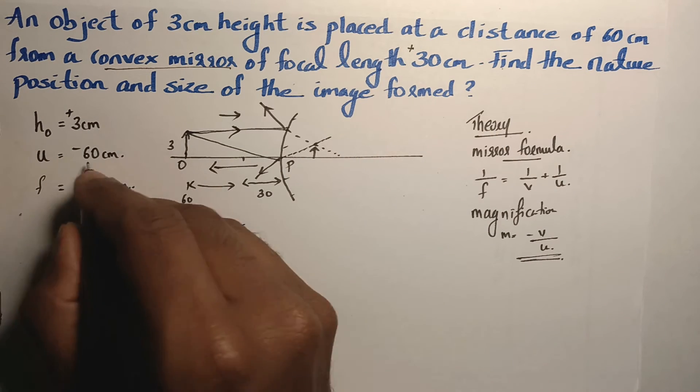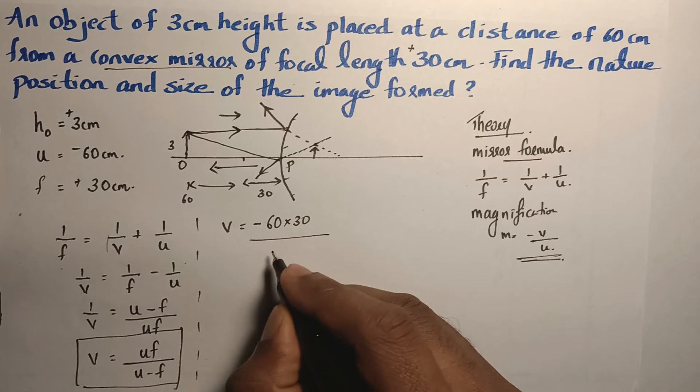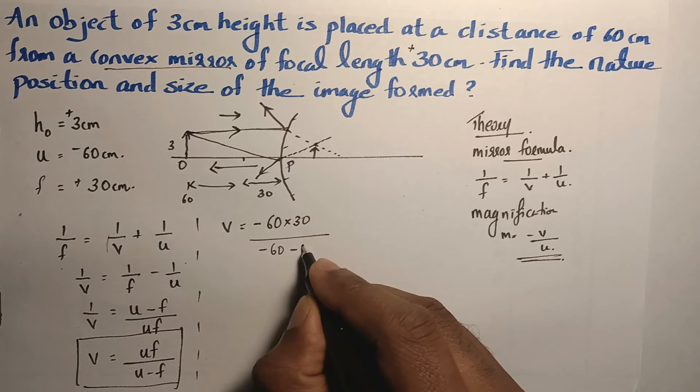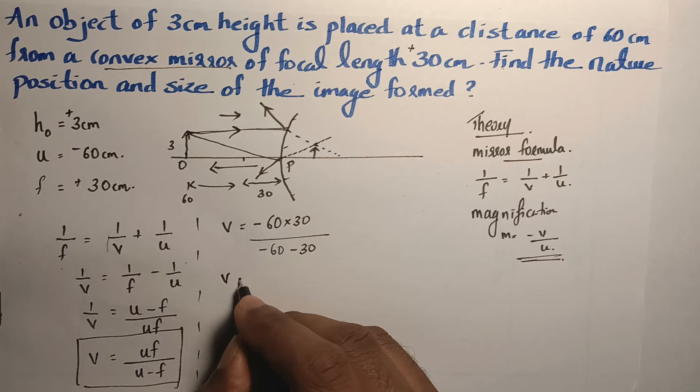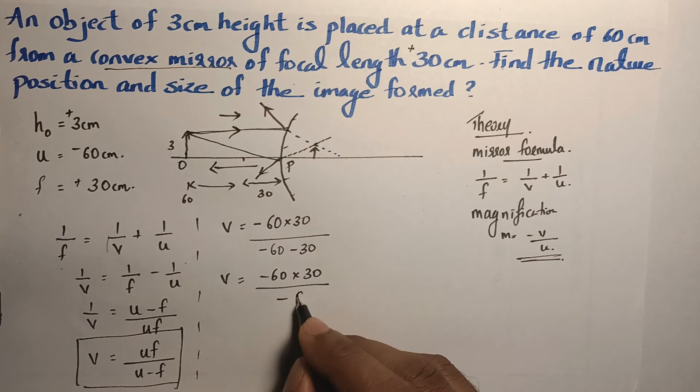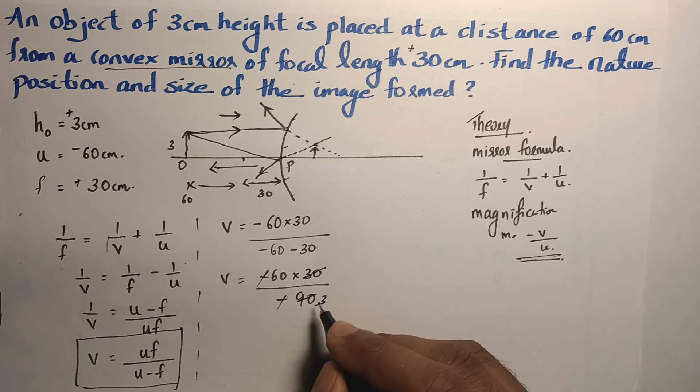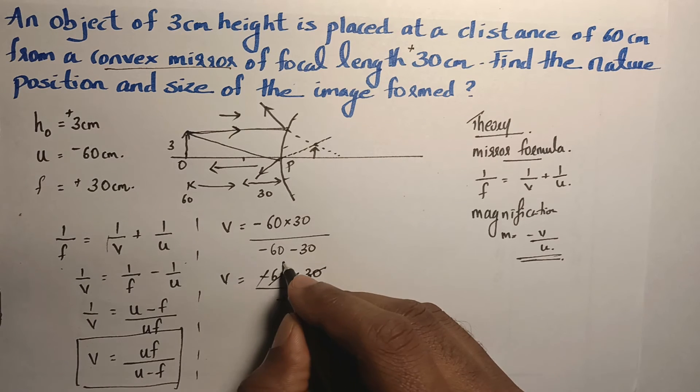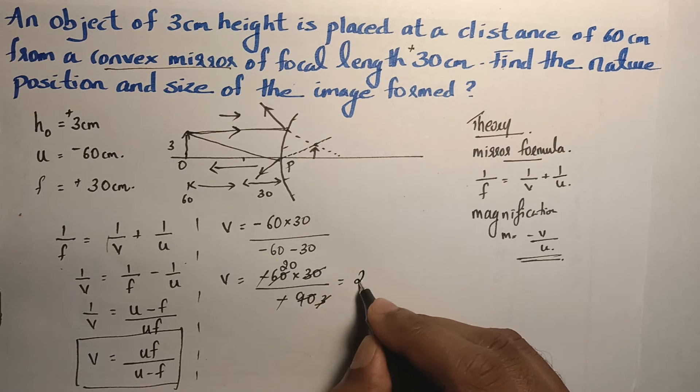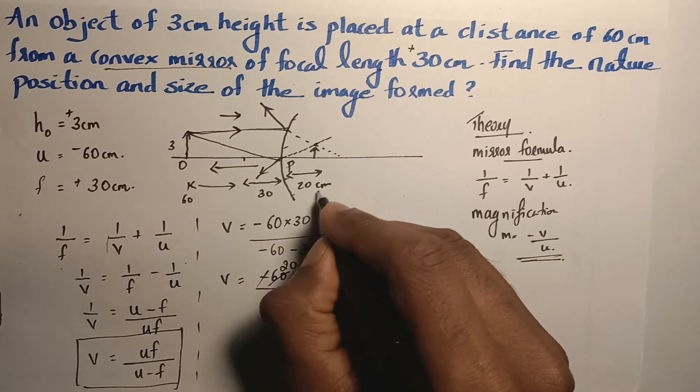Substitute these values minus 60 into 30 divided by minus 60 minus 30. V is equal to minus 60 into 30 by minus 60 minus 30 is minus 90. Minus minus got cancelled, the 33 times is 93. 20 is 60. So, the answer is 20 centimeter. This distance will be 20 centimeter.